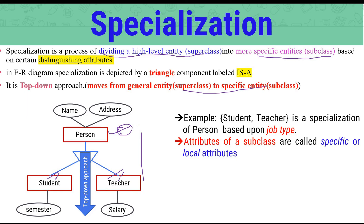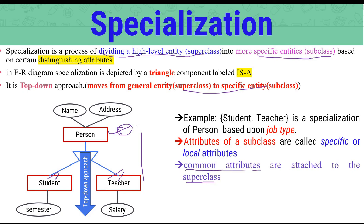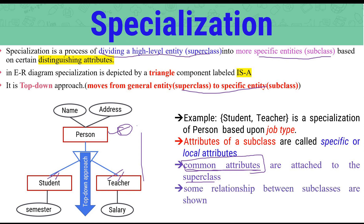Attributes of a subclass are called specific or local attributes. The Student's Semester attribute is a specific or local attribute. The Teacher's Salary attribute is a local attribute — specific only to that subclass. To conclude, generalization is a bottom-up approach while specialization is a top-down approach. Thank you for watching. Goodbye.